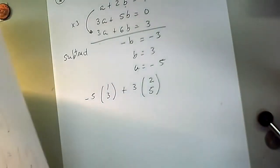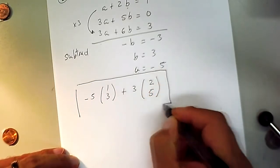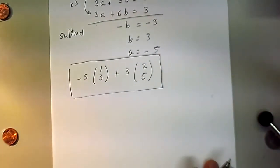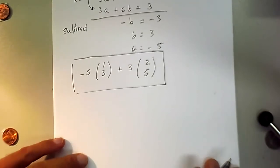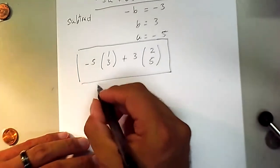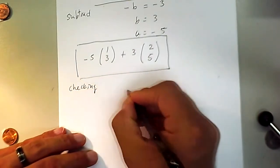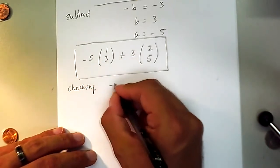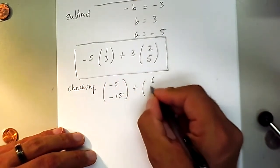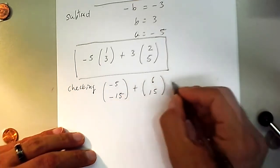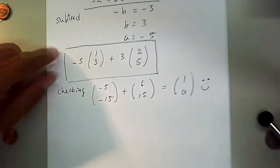Whenever you work this out, you should check your answer. Let's verify: −5·(1,3) = (−5, −15), and 3·(2,5) = (6, 15). Adding: (−5 + 6, −15 + 15) = (1, 0). That checks out — smiley face! That is the linear combination that works.